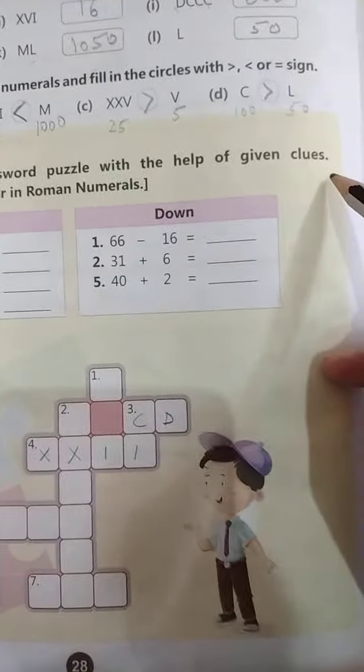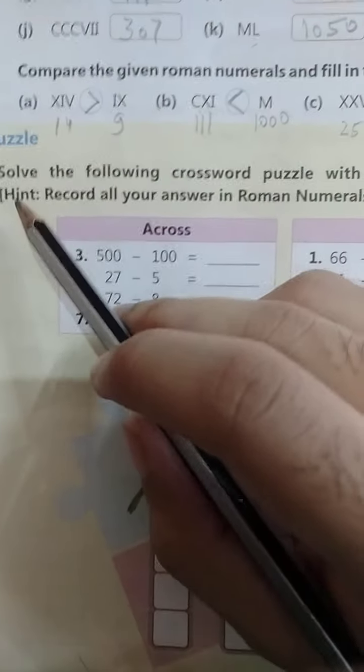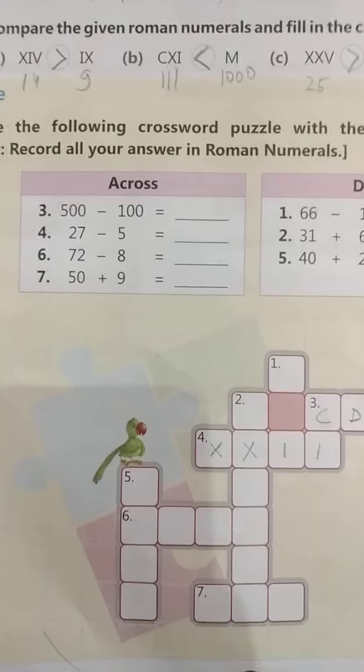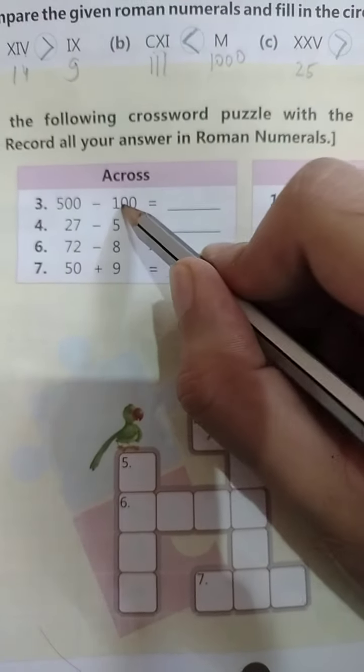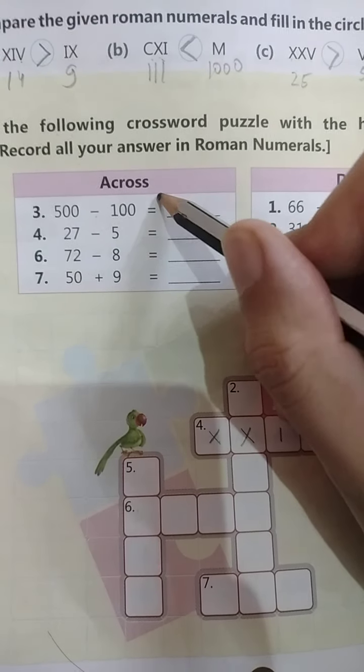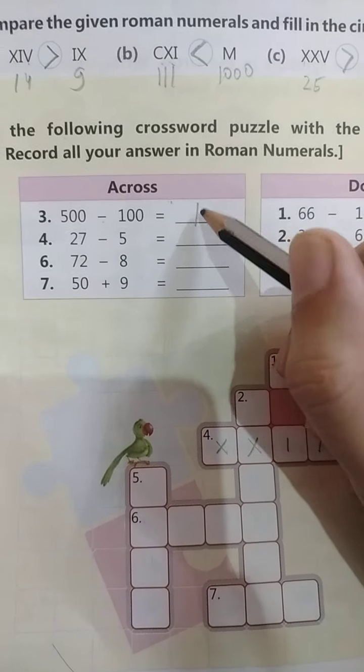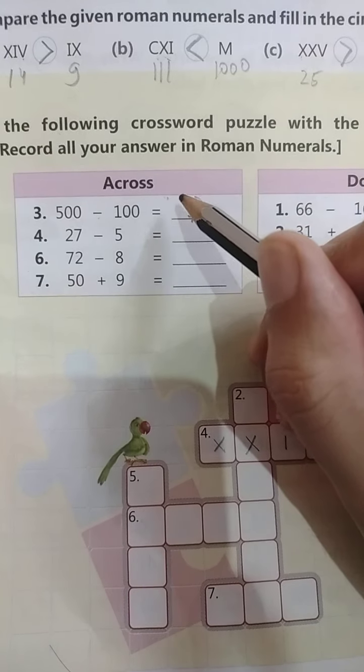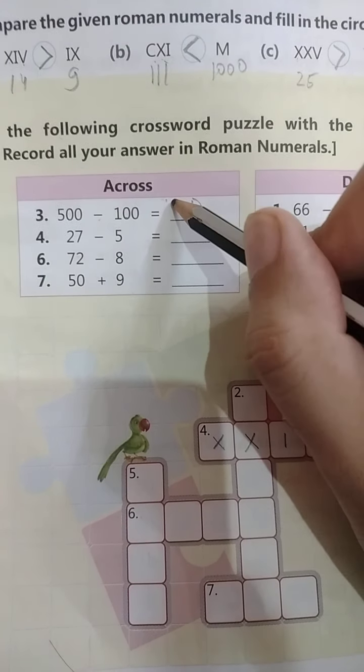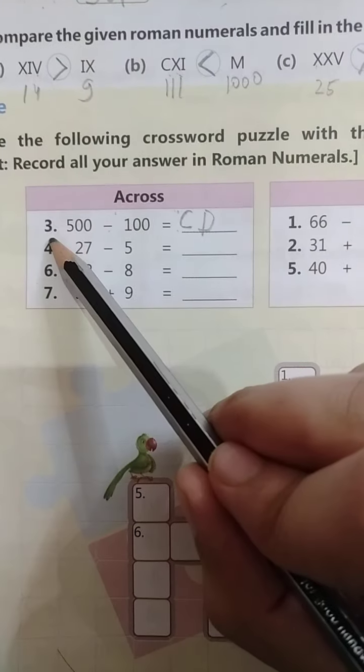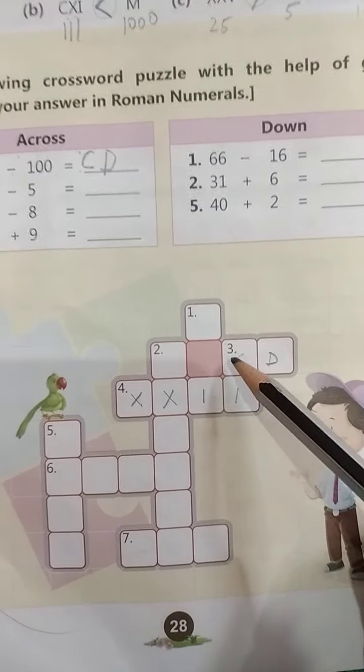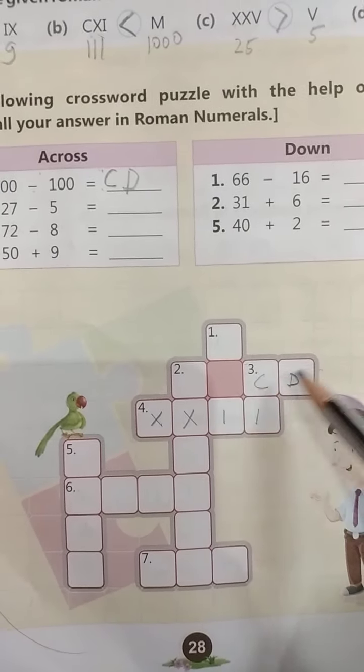Next, solve the following crossword puzzle with the help of given clue. Hint: record all your answer in Roman numerals. We need to write all your answer in Roman numerals. 500 minus 100, 400. 400, how do we represent? 500 minus, how do we represent 500? C D. Now across third, across, C D.